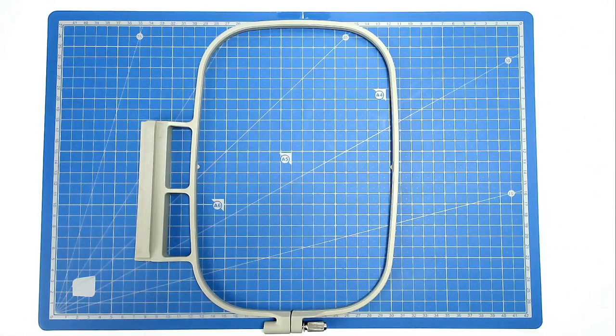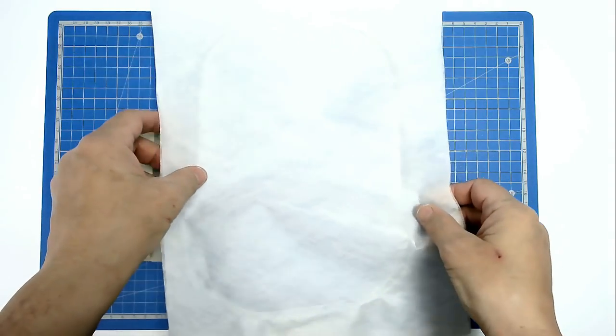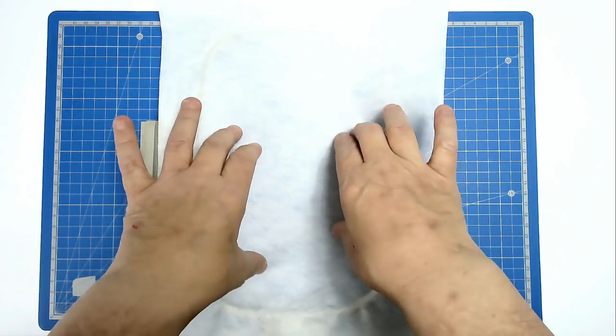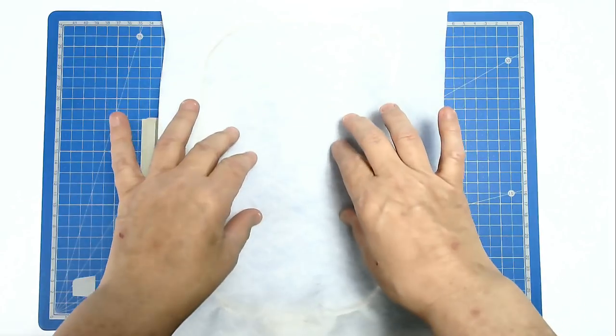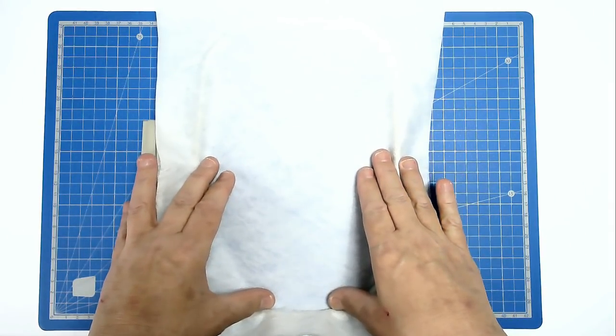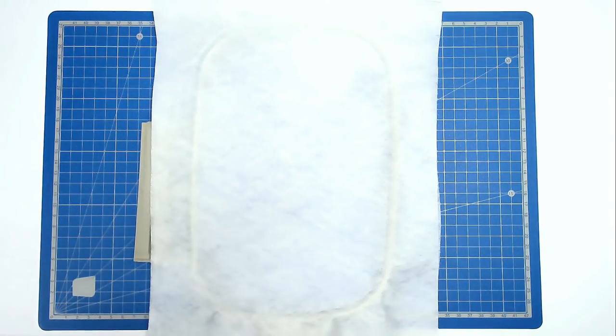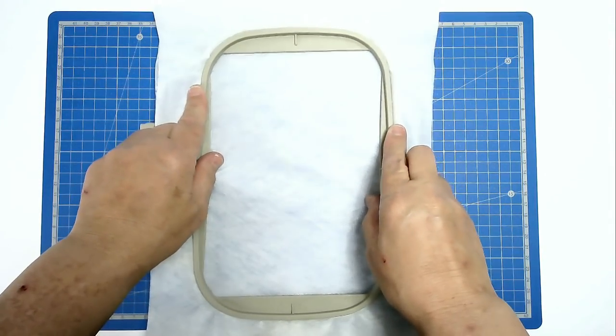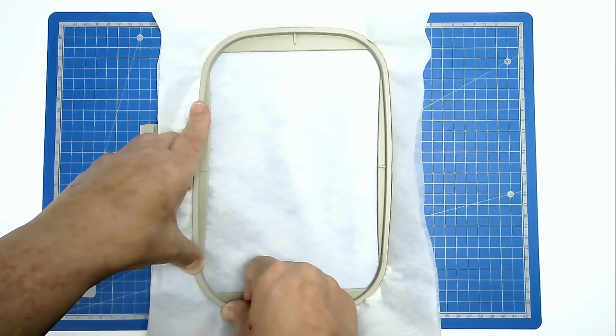You're going to start off by hooping two layers of wash away stabilizer. And the key to successful freestanding lace is good hooping. So place your two layers of stabilizer down and close your hoop as you would normally.